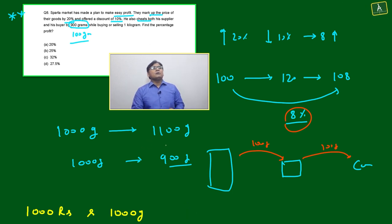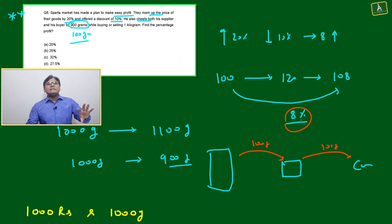The question is asking to find the percentage profit combining all these things. It's 100% sure he is gaining on average, you can say, 200 grams out of 1000 grams - that's around 20%. Plus this 8% gives 28%.